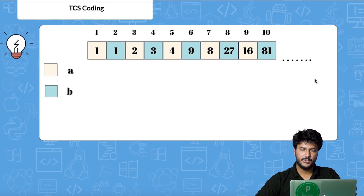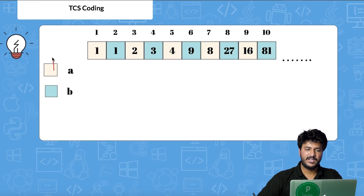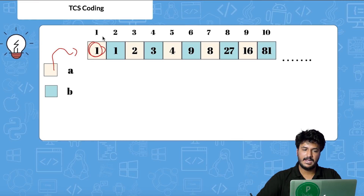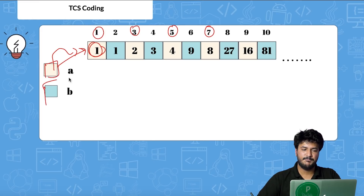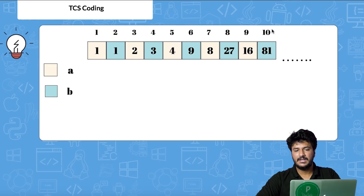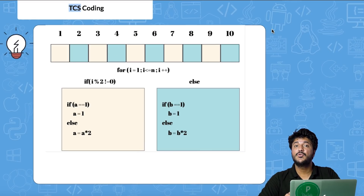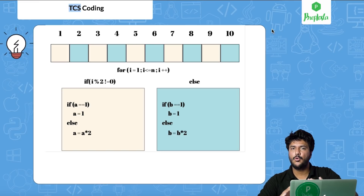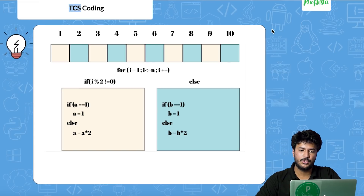We are going to use two variables, a and b. Variable a will store and print the values at odd positions (highlighted in cream color), and variable b will be used for the even positions (highlighted in blue). Let's look at the algorithm first — I'll teach you how to apply the logic, then show you the full code.